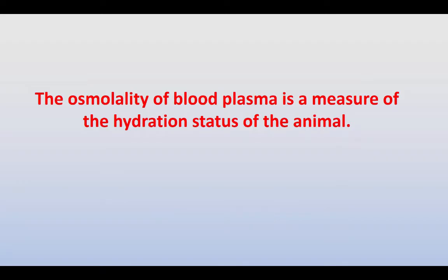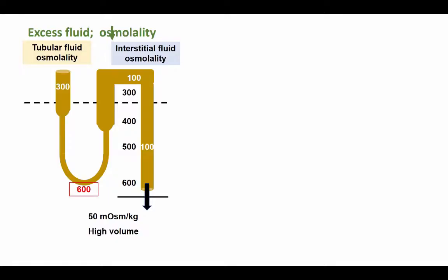The osmolality of blood plasma is simply a measure of the hydration status of the animal. When there is an excess of water in the body and body fluid osmolality is reduced, the kidney can excrete a diluted urine with a high volume and osmolality as low as 50 milliosmoles per kilogram of water.